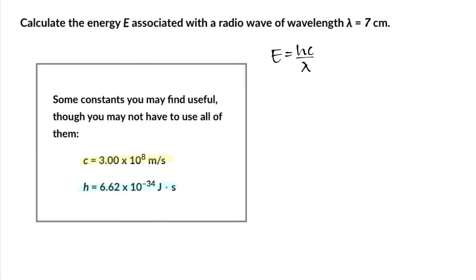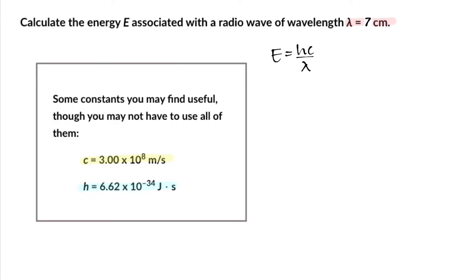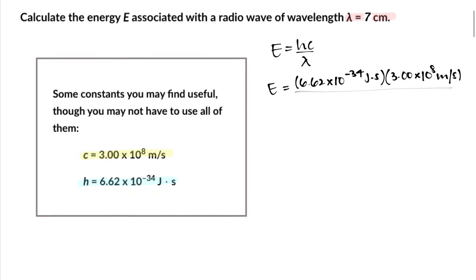We also have a value given for λ which is 7 centimeters. So we go ahead and plug in the numbers: 6.62 × 10^-34 joules times seconds times 3.0 × 10^8 meters per second, all over 7 centimeters.